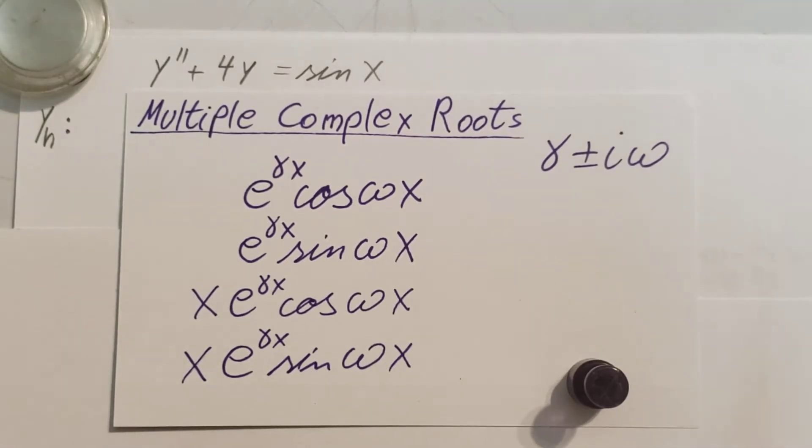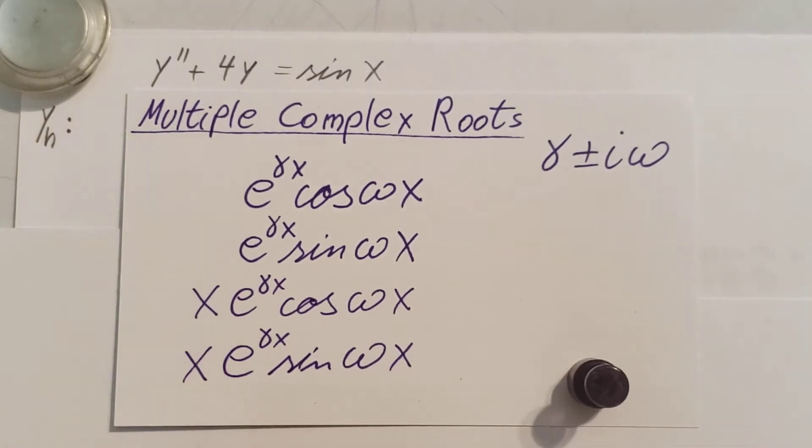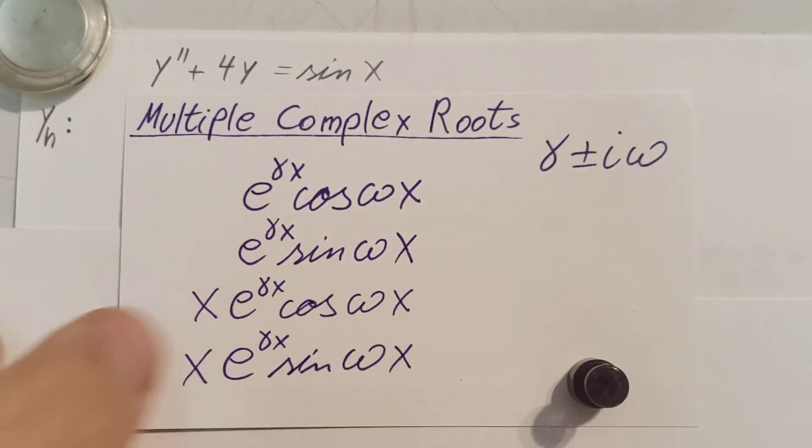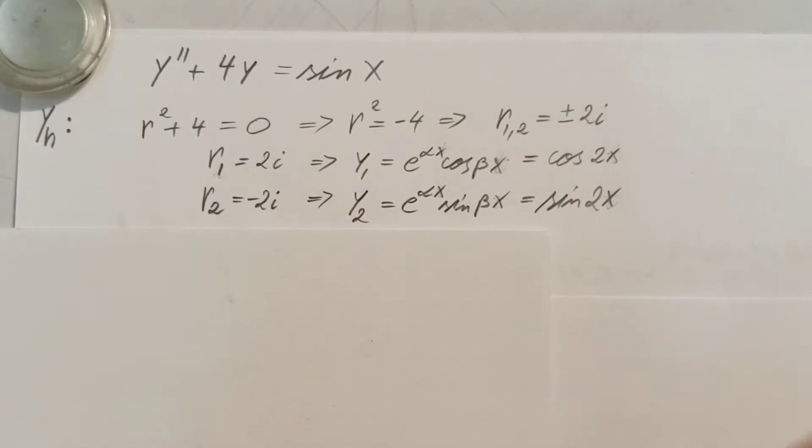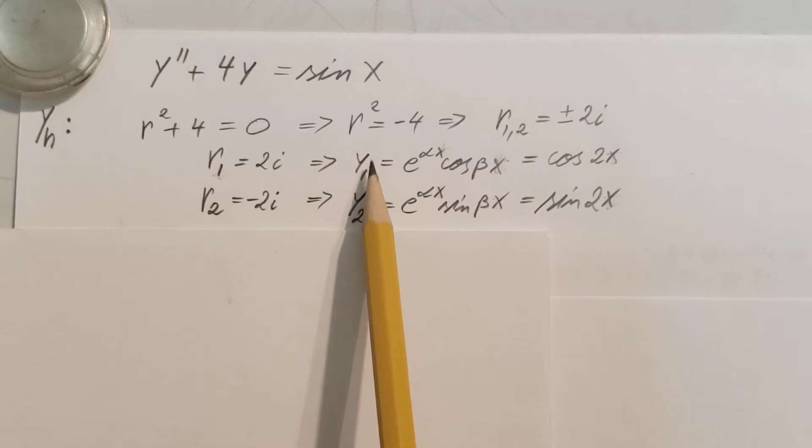Now to write up the solution for these two, we're gonna follow multiple complex roots. This is the layout we can find in any textbook, pretty much a formula given for us. We can plug it in and follow it. r₁, the first root, is 2i. So that's gonna give us y₁ = e^(αx) cos(βx). The α is the real part—we don't have one, so e^0 will be one, and all we have is cos(βx). β is 2, so cos 2x.